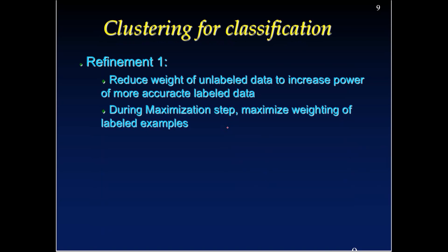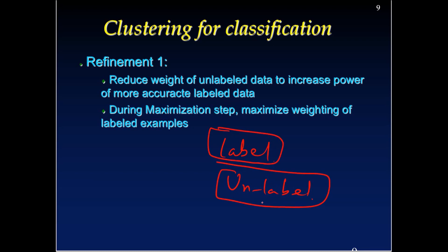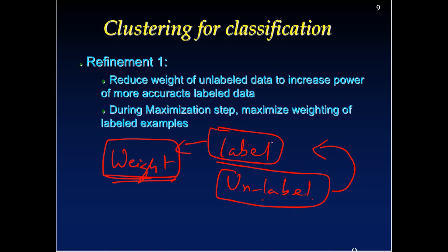One issue with this approach is that you are giving the same importance to labeled data as to unlabeled data, which is not good because labeled data is better quality than unlabeled data. When retraining, you should not give equal weight to unlabeled data as to labeled data — more weight should be given to the labeled data in the optimization algorithm, which would improve accuracy.